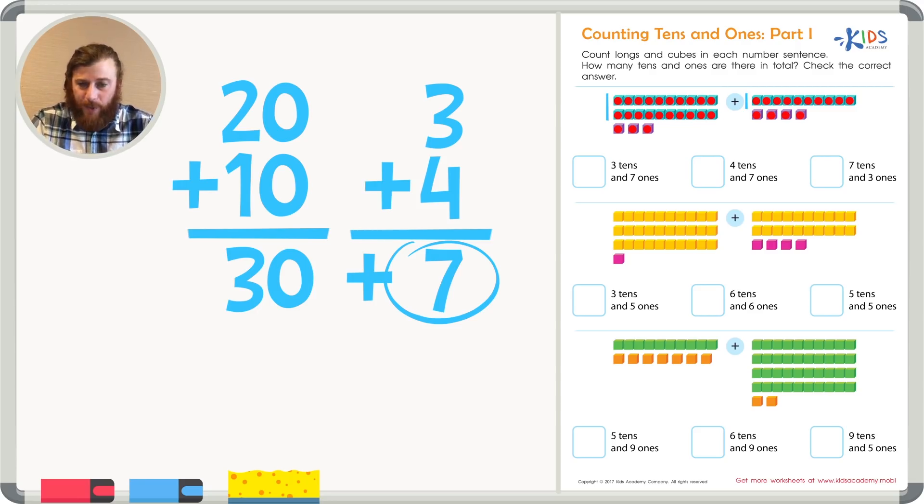I see one, two, and three tens, giving us a total of three tens and seven ones. The first answer choice is correct.